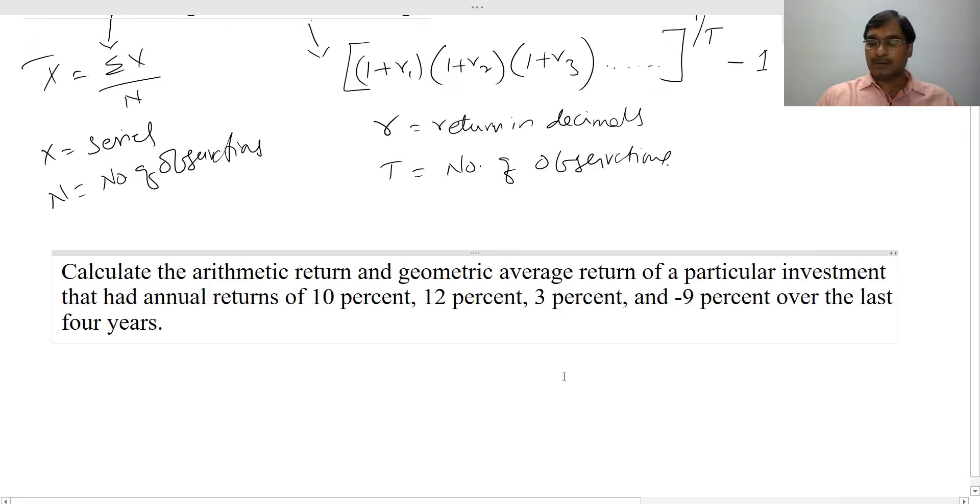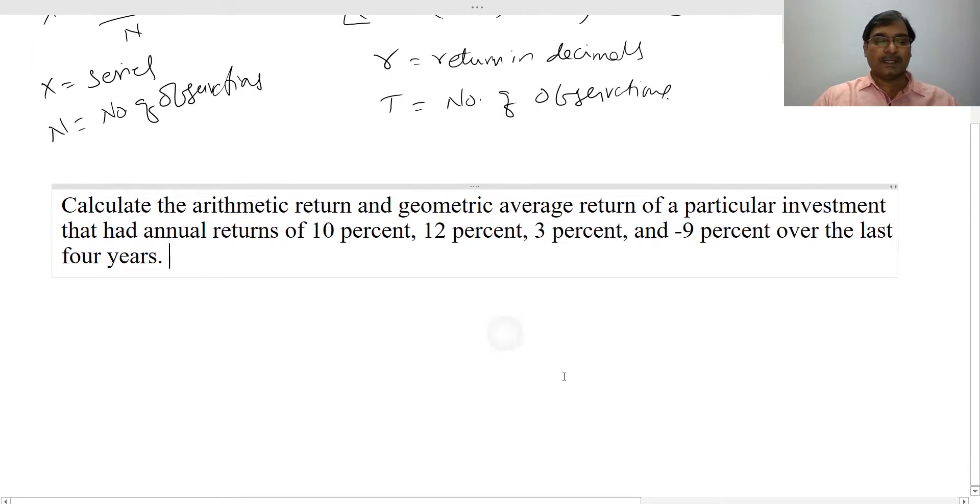Now I'll explain this with an example. Here is a return series where your returns are 10 percent, 12 percent, 3 percent, and minus 9 percent over the last four years. First we'll calculate the arithmetic mean.